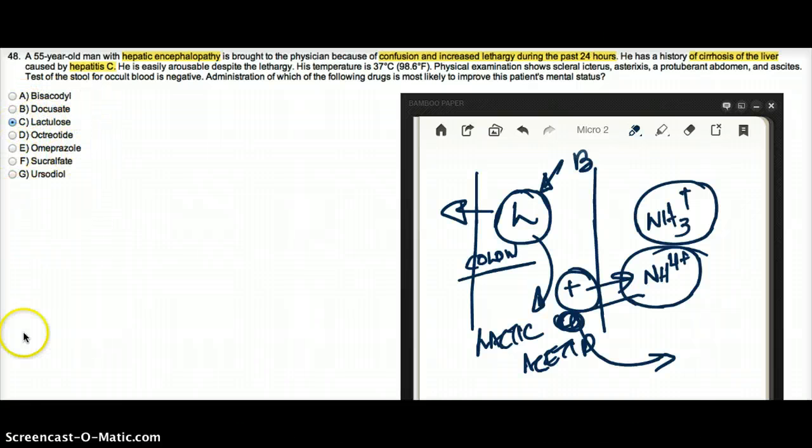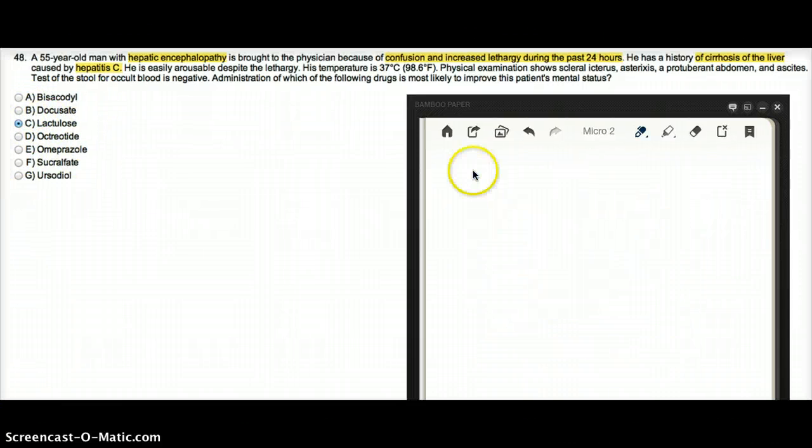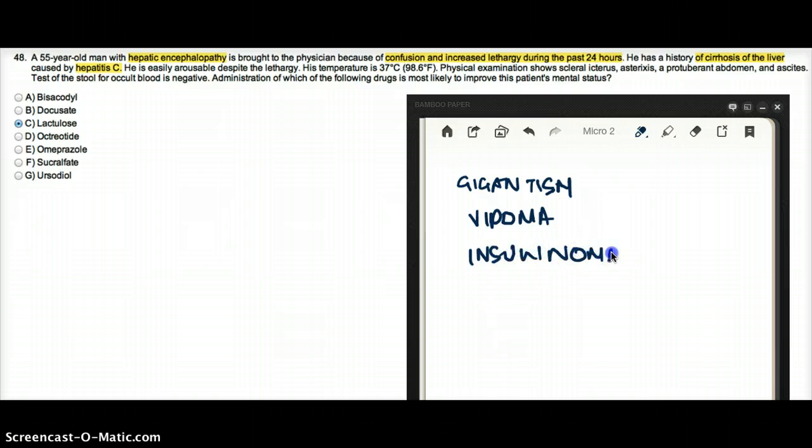When we're talking about octreotide, octreotide is a somatostatin analog. And it is used in diseases where you need somatostatin to inhibit their growth. For example, gigantism, vipoma, it's used in insulinoma, carcinoid syndrome.